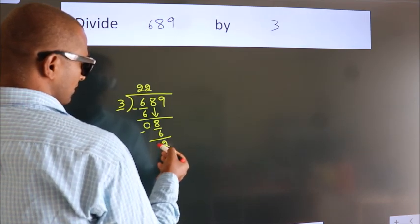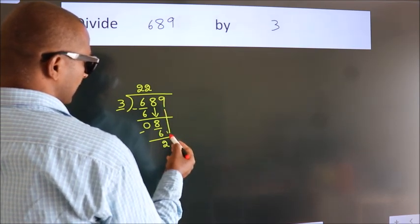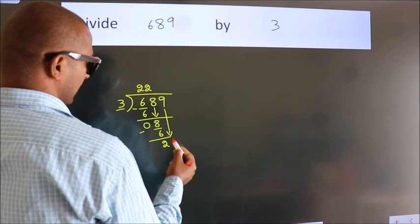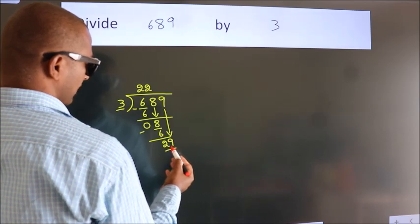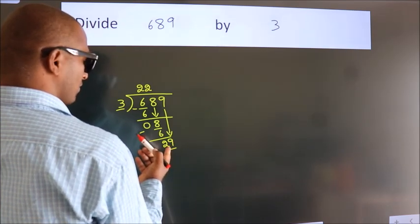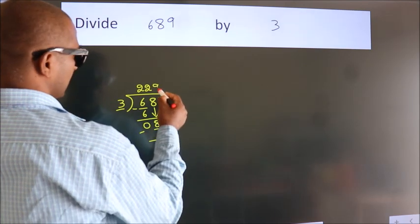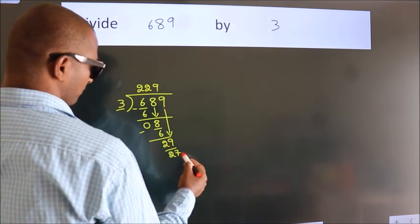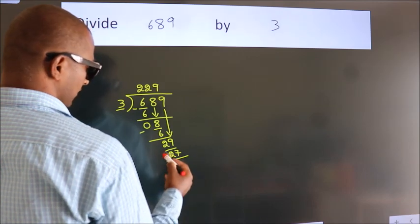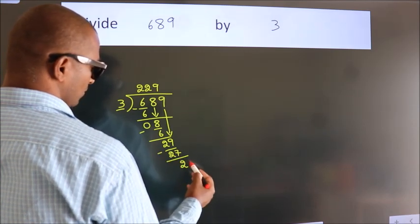After this, bring down the beside number. So, 9 down. 29. A number close to 29 in 3 table is 3 nines, 27. Now we subtract. We get 2.